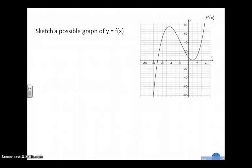So back to this question: sketch the possible graph of the original function by being given the graph of the first derivative function. So everything that we looked at before, we're going to kind of have to look at backwards here a little bit.